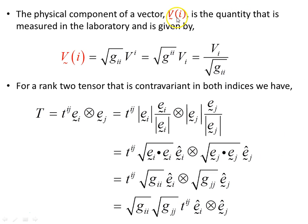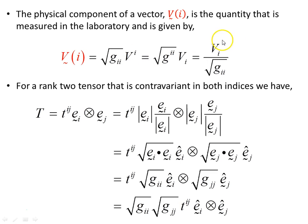The physical component of a vector, written V(i) using parenthetical notation to distinguish it from contravariant and covariant components, is the quantity measured in the laboratory. There are three component forms: contravariant, covariant, and physical. The physical component is given by the square root of G_ii times V^i, or equivalently by the square root of G^ii times V_i, or by this equivalent form for an orthogonal system — both expressions give the same value.